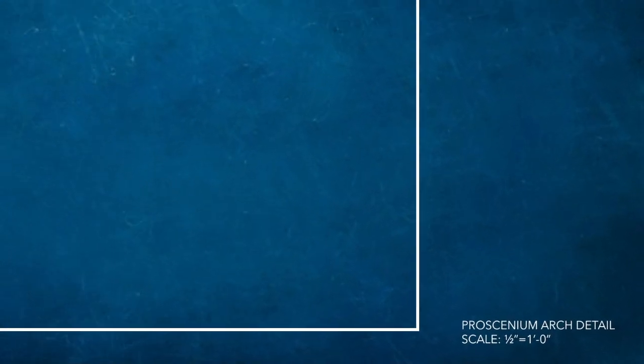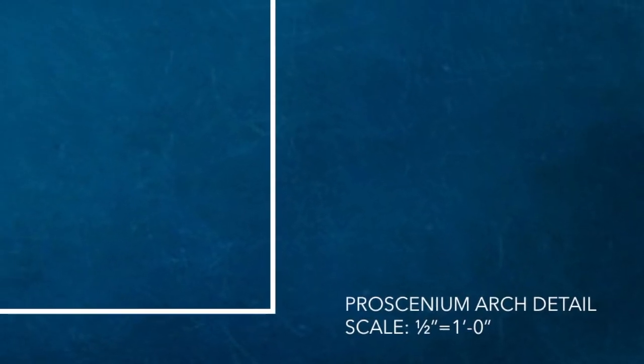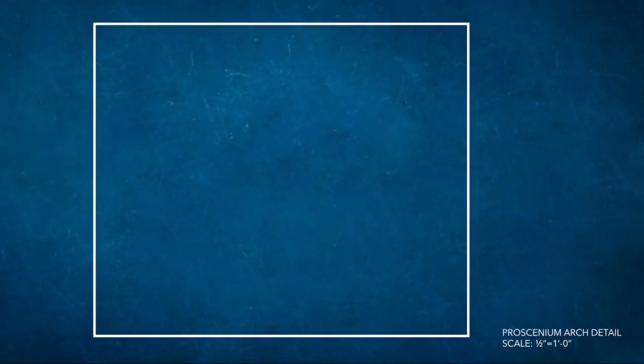Let's take a look at our draftings for this project. Draftings are technical drawings that include sections, elevations, and ground plans. These drawings communicate how something functions or is constructed. In this case it's the proscenium of our model box. Remember this model will be constructed in half inch scale.